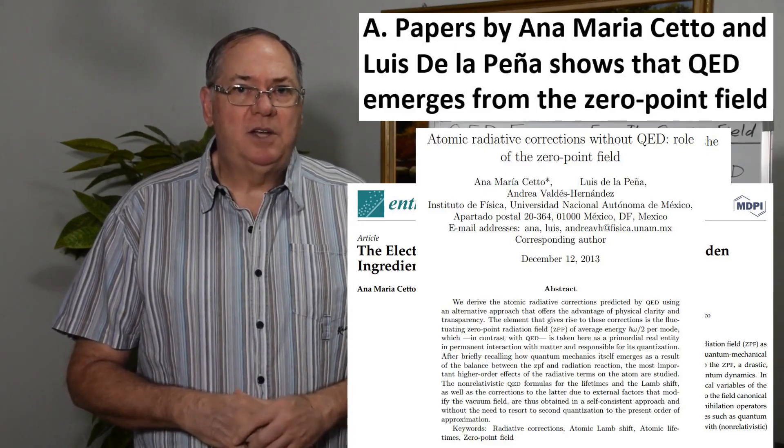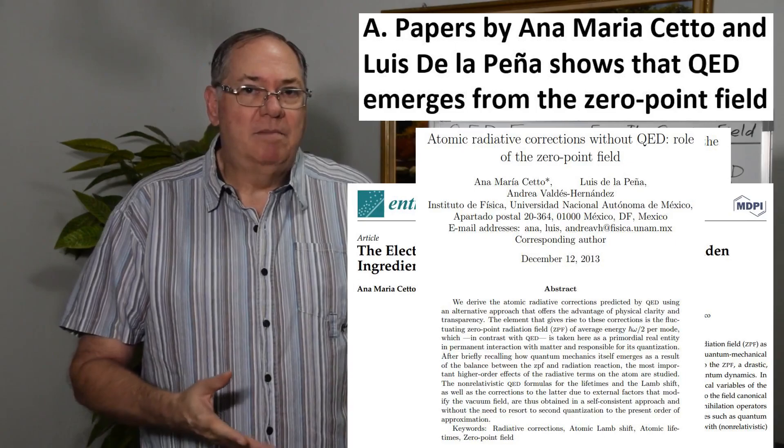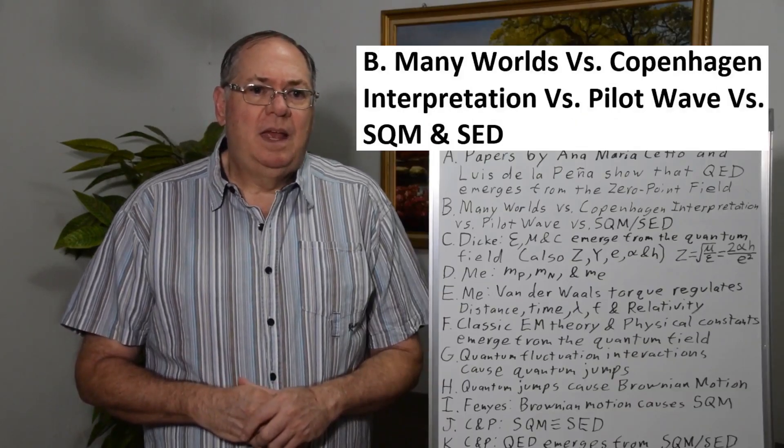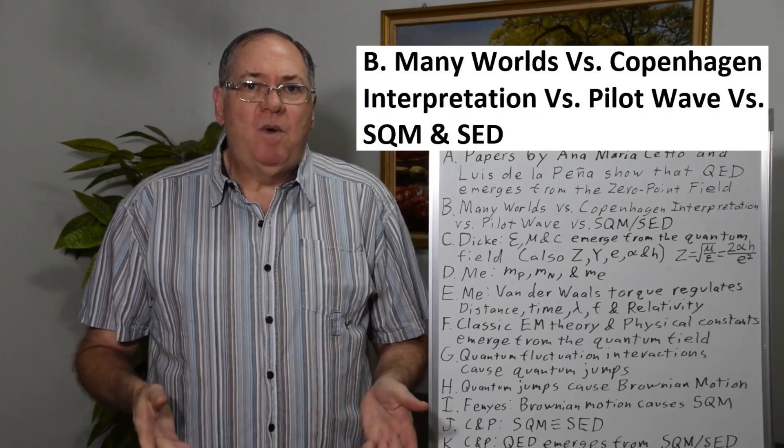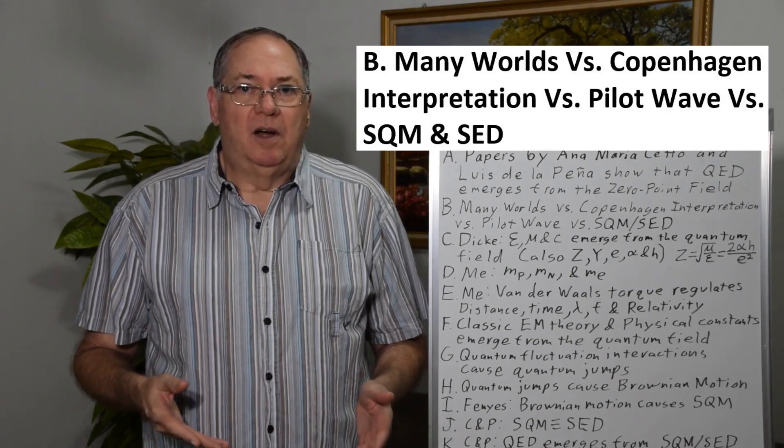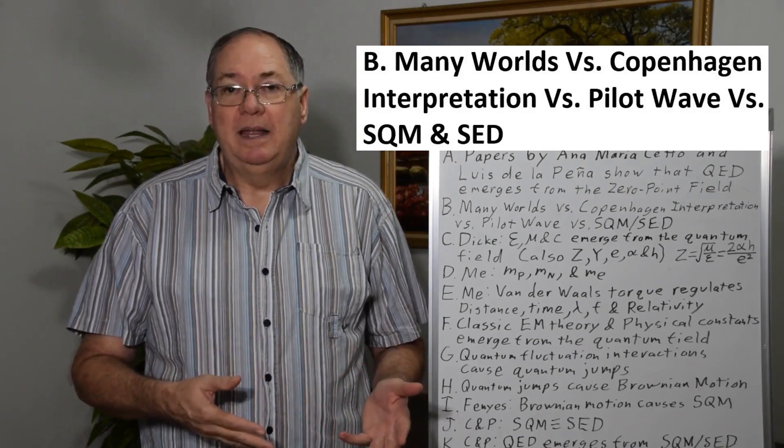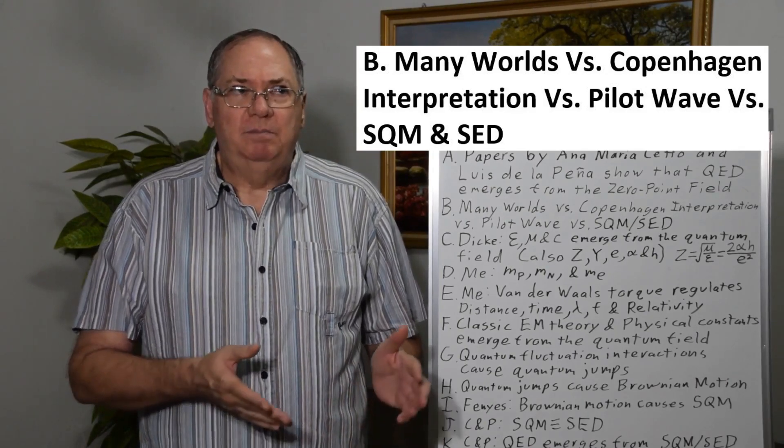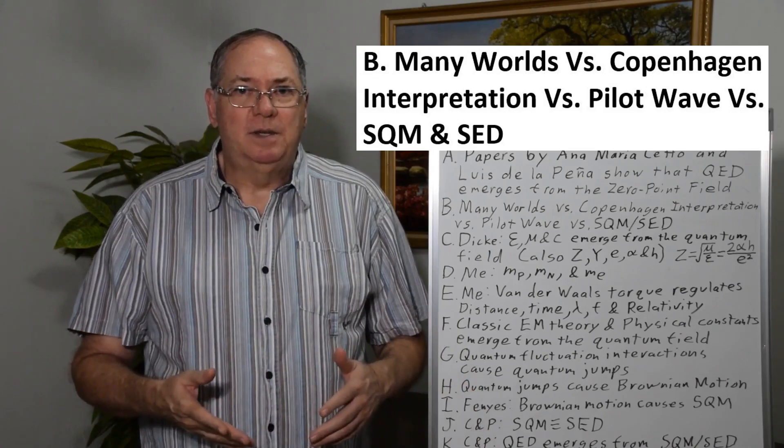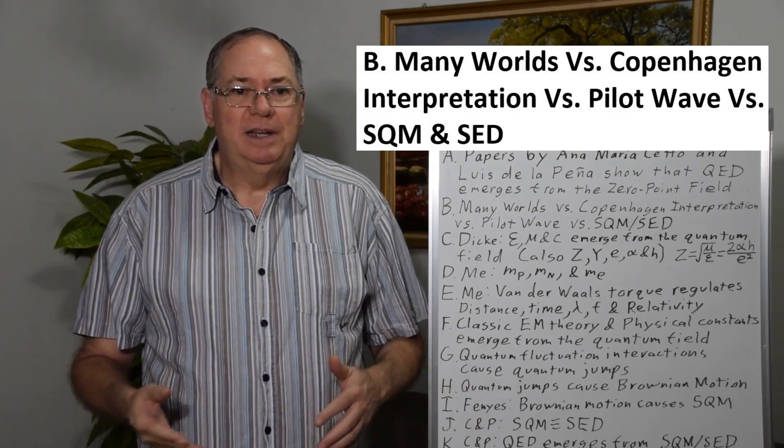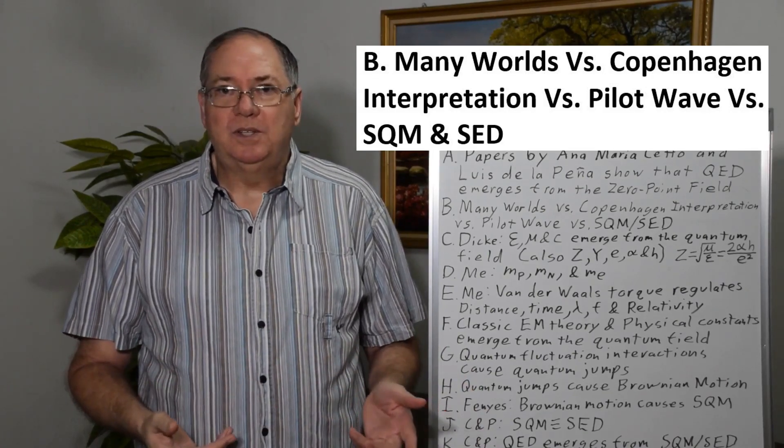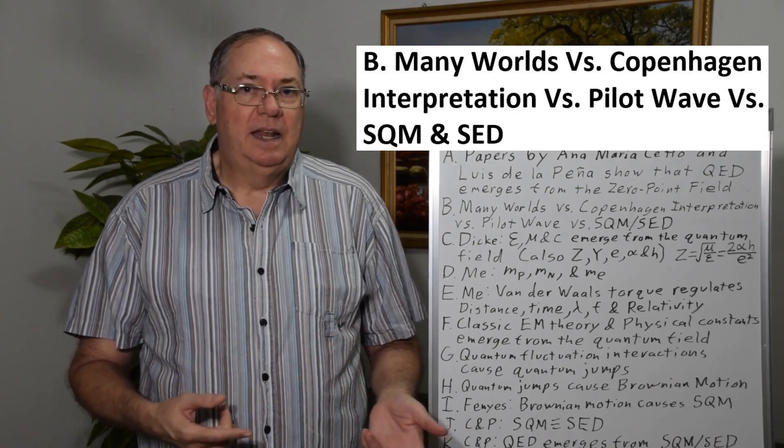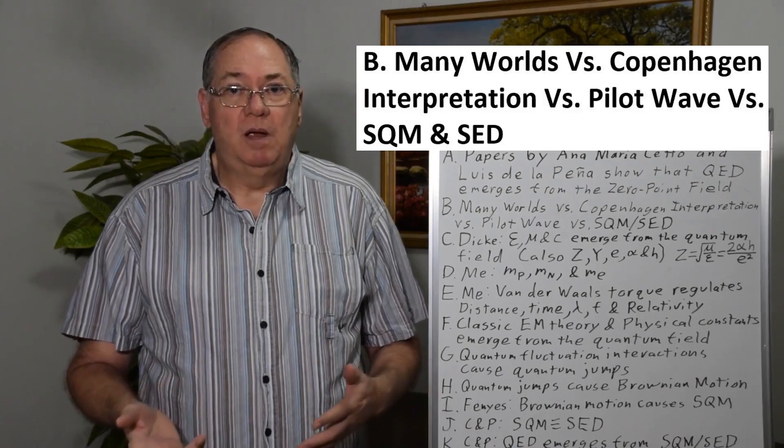For me, when I talk about the quantum field, I mean the zero-point field version of it. And when you talk about quantum electrodynamics, there are three main types that people normally talk about from most imaginary to possibly real: the many worlds interpretation, Copenhagen interpretation, and then the pilot wave interpretation, or de Broglie-Bohm.